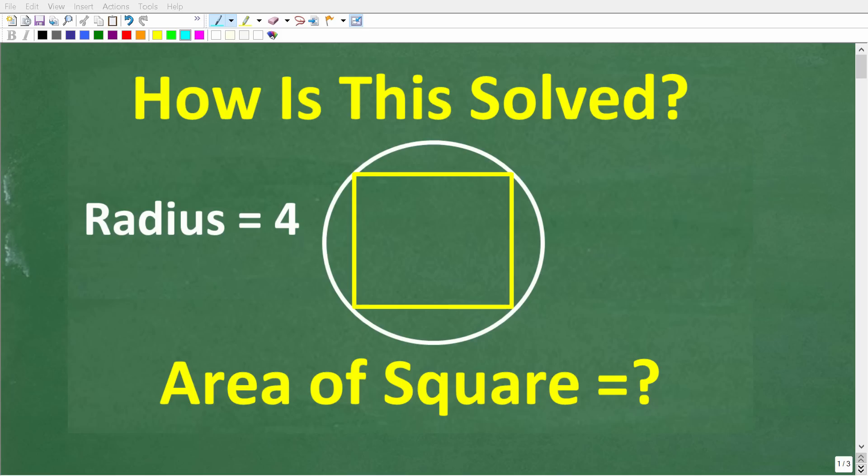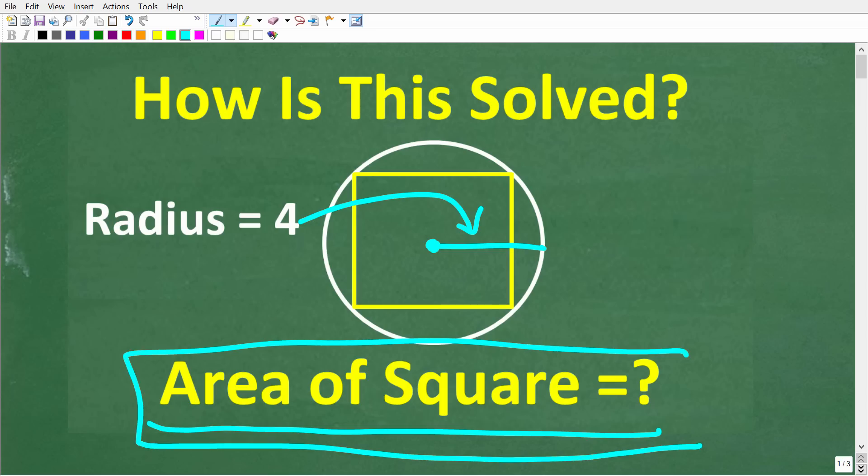Alright, so let's see if you can figure out how to solve this very interesting math problem. What we're trying to do here is find the area of this square. So we have a square inscribed in a circle.